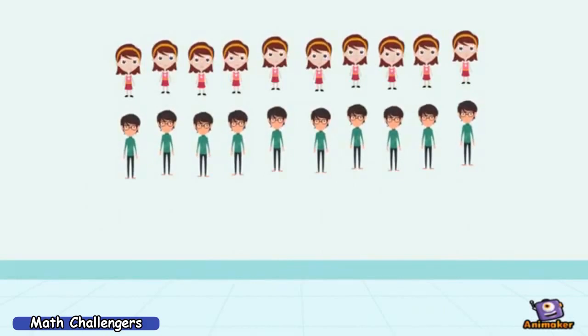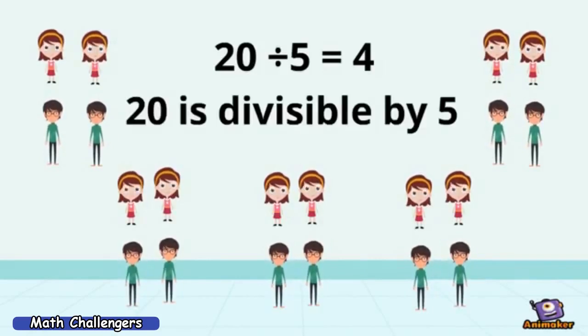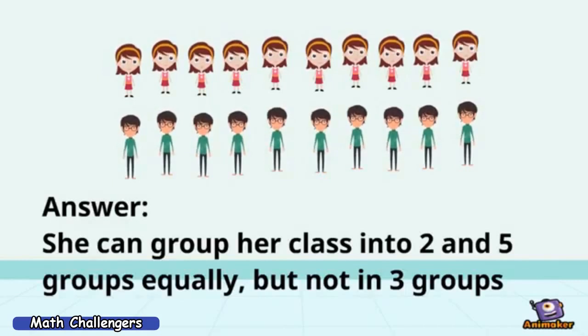When the students were divided into five groups, how many students are there in each group? There were four equal members in each group, so we can say that 20 is divisible by 5. So the answer to the problem is, she can group her class into 2 and 5 groups equally but not in 3 groups.